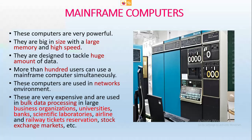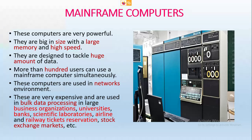Next is mainframe computers. As you see in the picture, these computers are very powerful. They are big in size with large memory and high speed. They are designed to tackle a huge amount of data. More than 100 users can use a mainframe computer simultaneously. These computers are used in network environments. They are very expensive and are used in bulk data processing in large business organizations, universities, banks, scientific laboratories, airline and railway ticket reservation, and stock exchange markets.